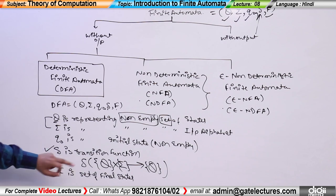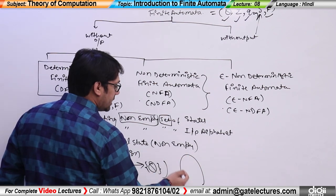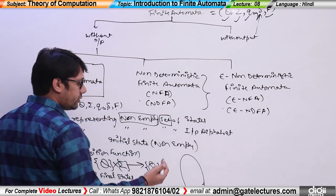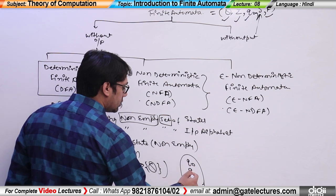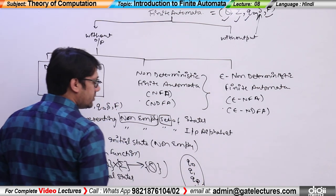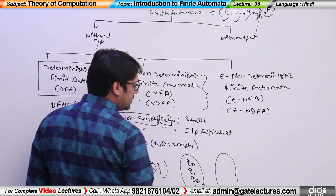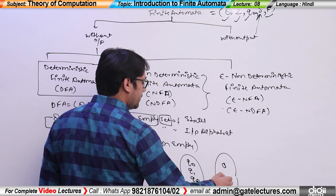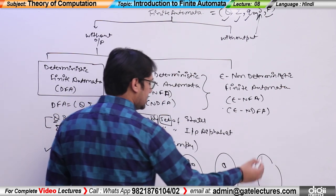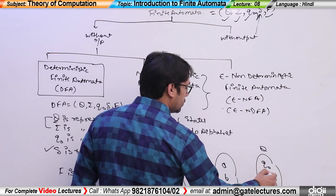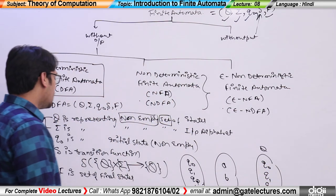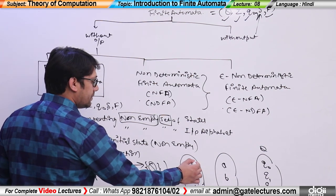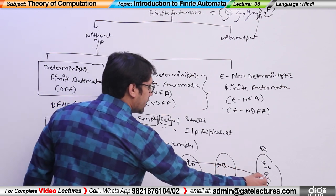Now what does the transition function say? The transition function says: if you have a set of states Q, such as q0, q1, q2, and you have a set of alphabets Σ — assume you have two alphabets: small a and small b — then when I say Q × Σ takes us to Q, it means: if you are on one state and you see one symbol, you take a transition. Then on the same state, you see another symbol, you take another transition.